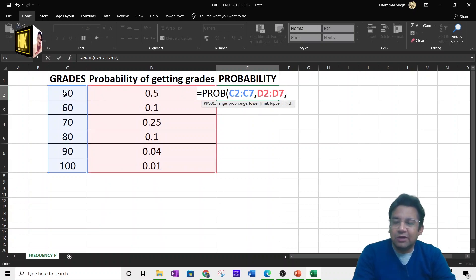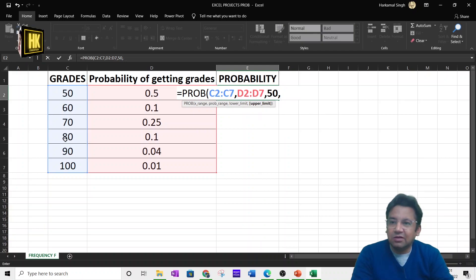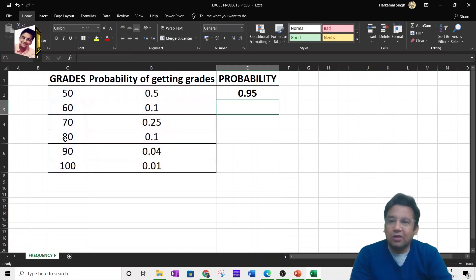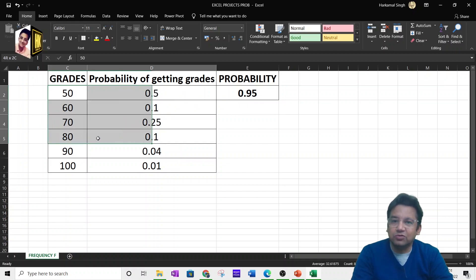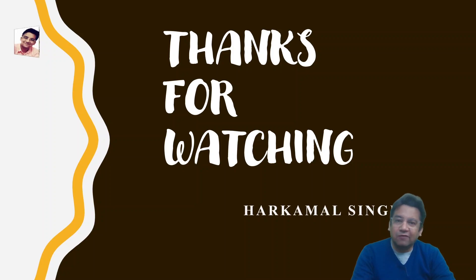Now lower limit. What is the lower limit? For example, I am taking a lower limit as 50 and upper limit as 80. So bracket close. You will press enter. Now the probability of these values will be 0.95. Hope you have understood the formula of probability using Excel.